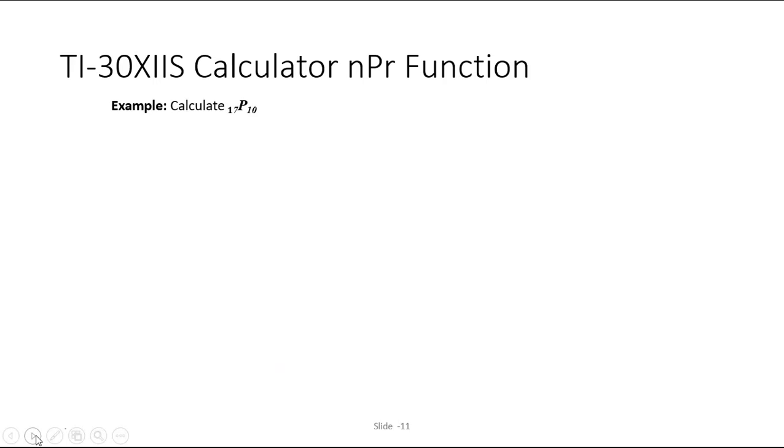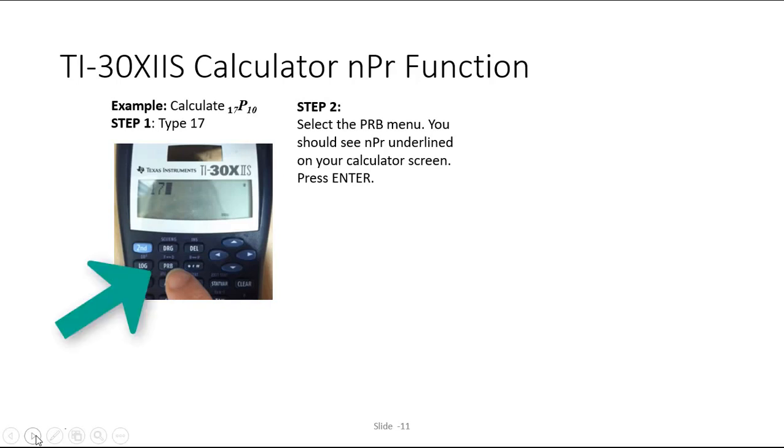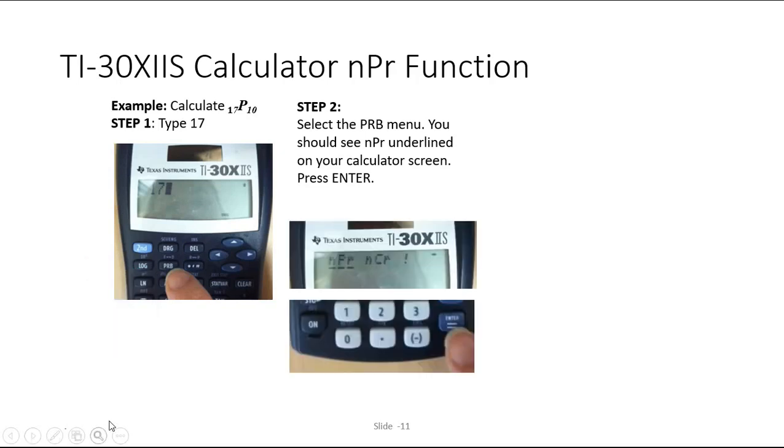So here's the TI-30X2S calculator NPR function. This is the one I used in my class. It's similar to a lot of the Texas Instruments calculators. So let's take a look. Step one, you would type 17 into your calculator. Step two, you're going to select PRB, the PRB button, and I'm pointing to in the picture there. And when you select it, you'll see NPR appear on your screen. It's already underlined.